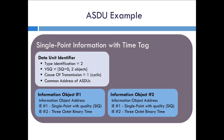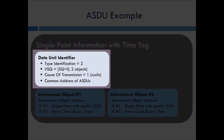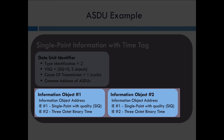As an example, let's put together an ASDU for single point information with a time tag. You include the single point with quality, a three-octet binary time, and the address for the object — that's the information object when those three things are put together. The data unit identifier will identify the type as type 2. The VSQ will indicate it's not a sequence ASDU. The cause of transmission — for a cyclic measurement from the outstation — would be set to 1. It also has the common address for the ASDU. In this example, there are two information objects, though you could have up to 127 in one single ASDU.